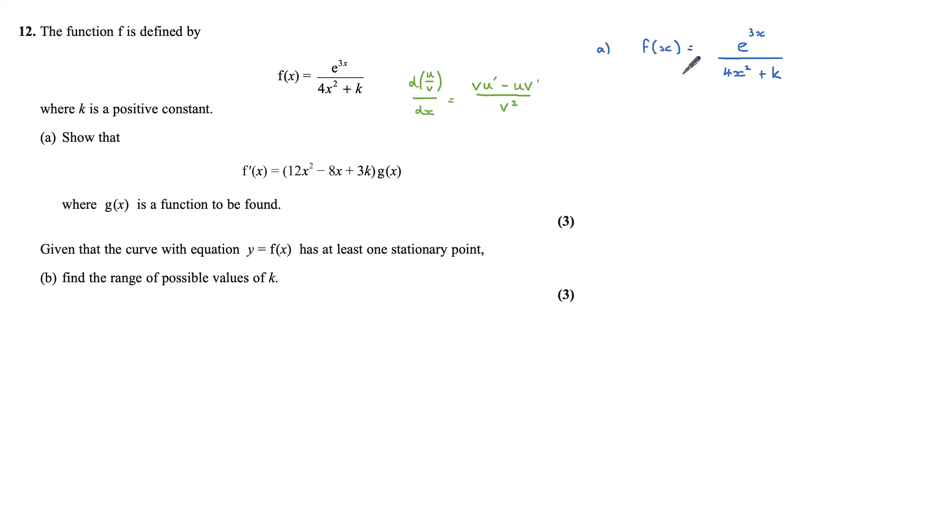So, starting from my f(x) equals e^(3x) over 4x² plus k, my numerator here is my u, so u equals e^(3x), and v equals 4x² plus k. I can now differentiate these.